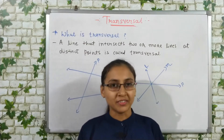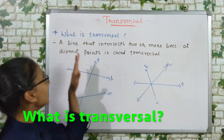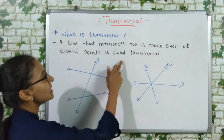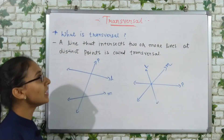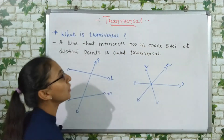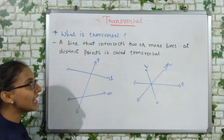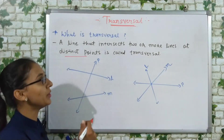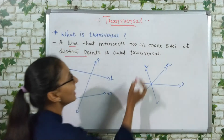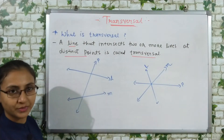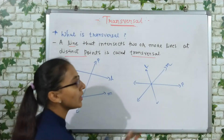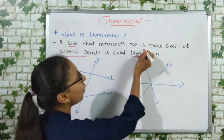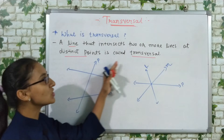So friends, let's start with: what is a transversal? A line that intersects two or more lines at distinct points is called a transversal. That means we have two or more lines, and they intersect at distinct points — separate, different points. That line is what we call a transversal.